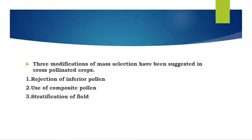To overcome these two defects, three modifications of mass selection have been suggested in cross pollinated crops: one is rejection of inferior pollens, use of composite pollen, and stratification of field.